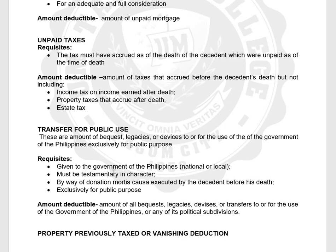For example, if you have a property worth P1 million transferred for public use to take effect upon death, it is included in the gross estate at P1 million, and you claim it as a deduction as transfer for public use at P1 million. The net effect is zero — it is included in the gross estate at fair value and deducted at fair value.